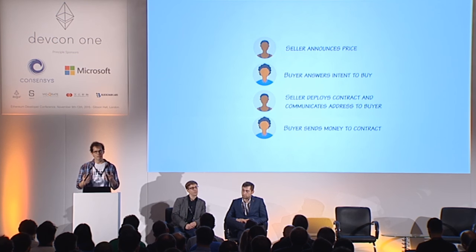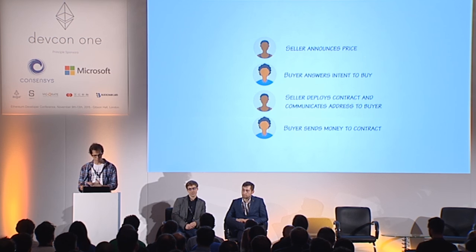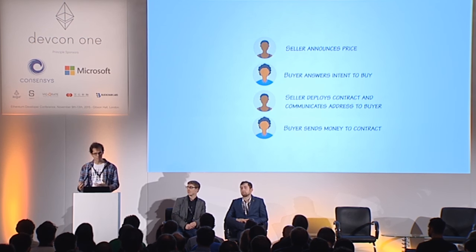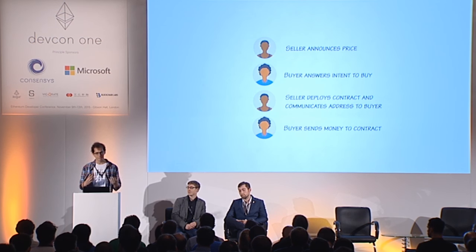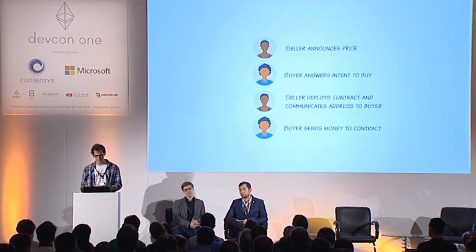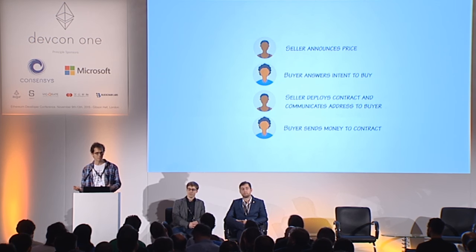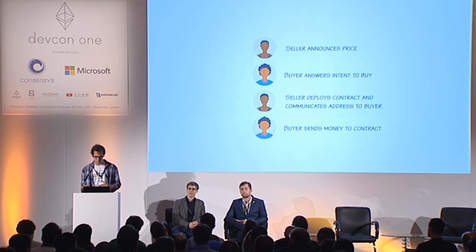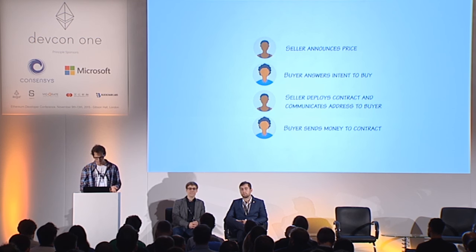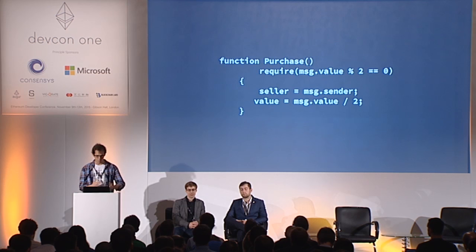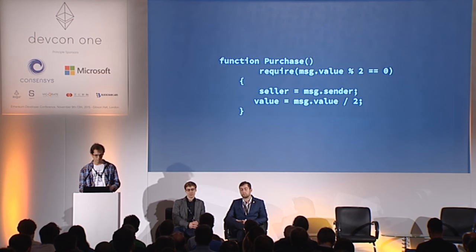The way someone would interact with the contract was: the seller announces the price on the blockchain, the buyer says 'I want to buy your stuff,' the seller gets the buyer's address, deploys the contract, communicates the address back, and then the buyer sends money to the contract. In some sense that might make sense, but it creates a lot of problems and makes the interface much more complicated — for example, what if the buyer disappears? Then you need to add a refund mechanism.